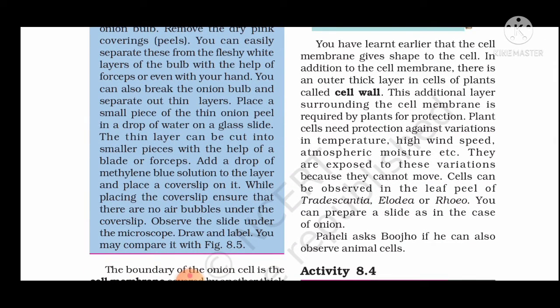In addition to the cell membrane, there is an outer layer in plant cells called the cell wall. The cell wall is a very important outer layer found in plant cells.